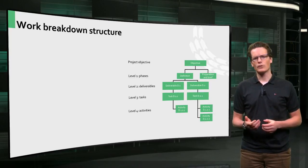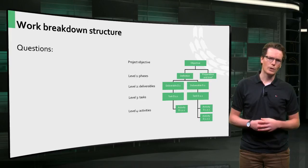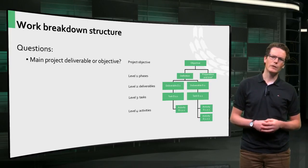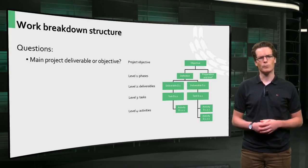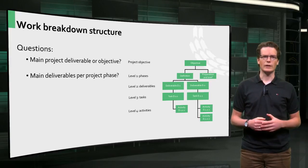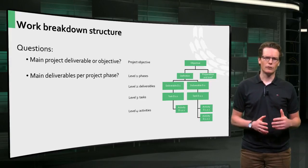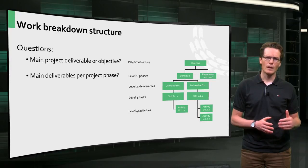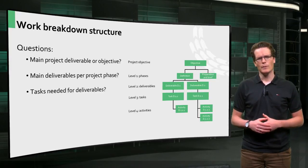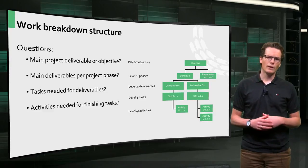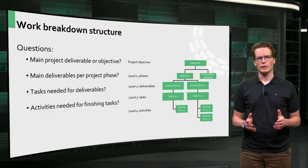To help you build a work breakdown structure, you need to answer the following questions. What is the main objective or deliverable of your project? Looking at each phase of your project, what are the main deliverables of each phase? What tasks need to be performed to make the deliverables? And finally, what activities should be done to finish a particular task?